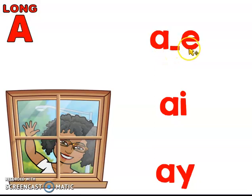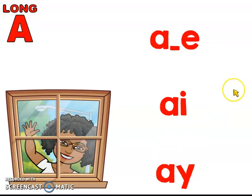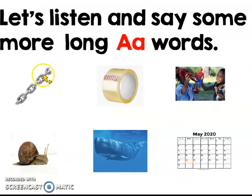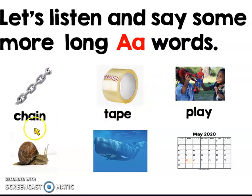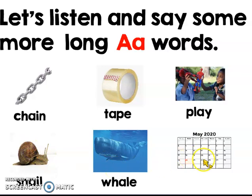Let's not forget our three ways to spell the long A sound. We have A, a consonant goes here, and a silent E — that means E doesn't make any sound. Then you have A-I that says A, and A-Y that says A. Now let's practice reading some A words. We're going to say the names of the pictures: chain, tape, play, snail, whale, may.